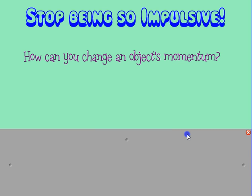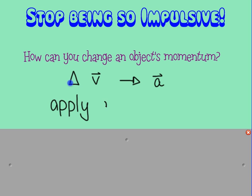Momentum equals mass times velocity. We don't commonly change an object's mass — that's usually constant — but velocity is something we change fairly often. So to change momentum, we change velocity. Changing velocity means acceleration, and to get acceleration we apply a force. So to change something's momentum, we need to apply a force to that object.